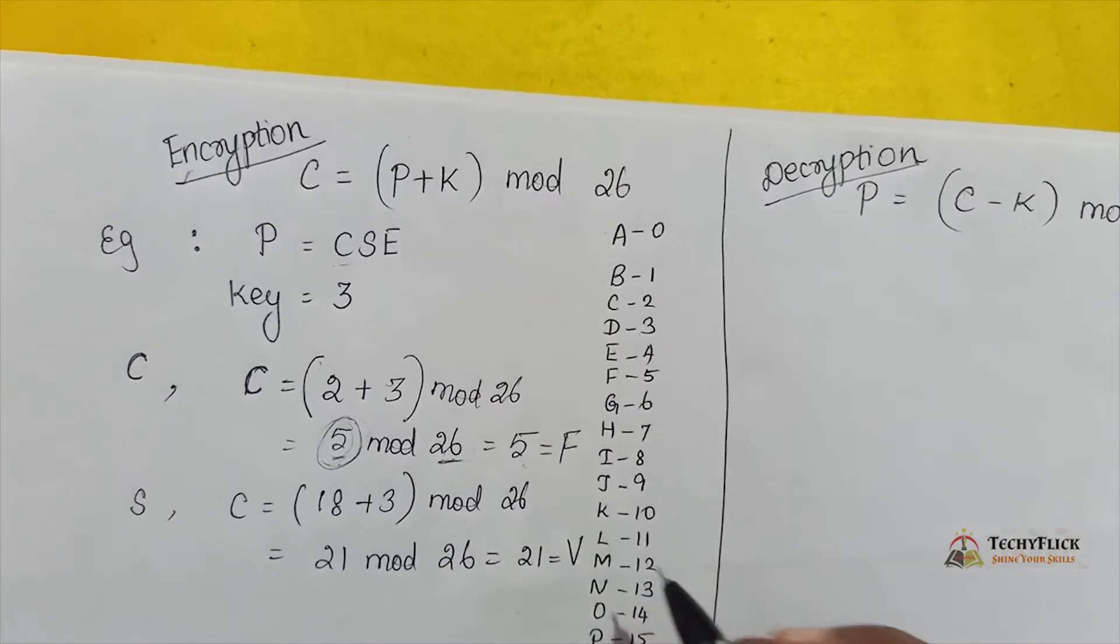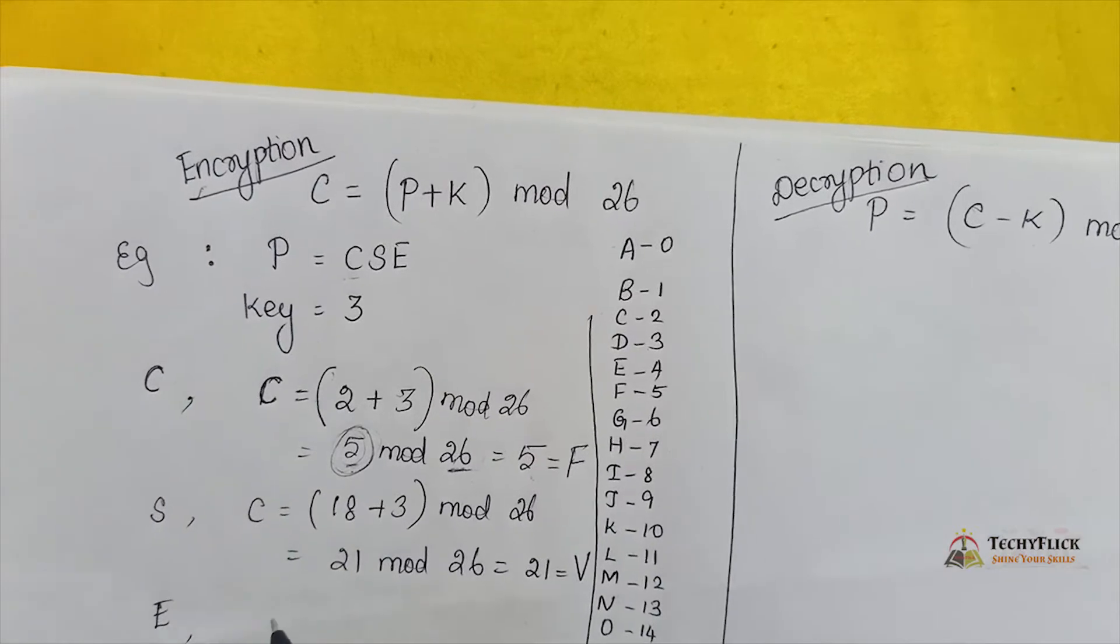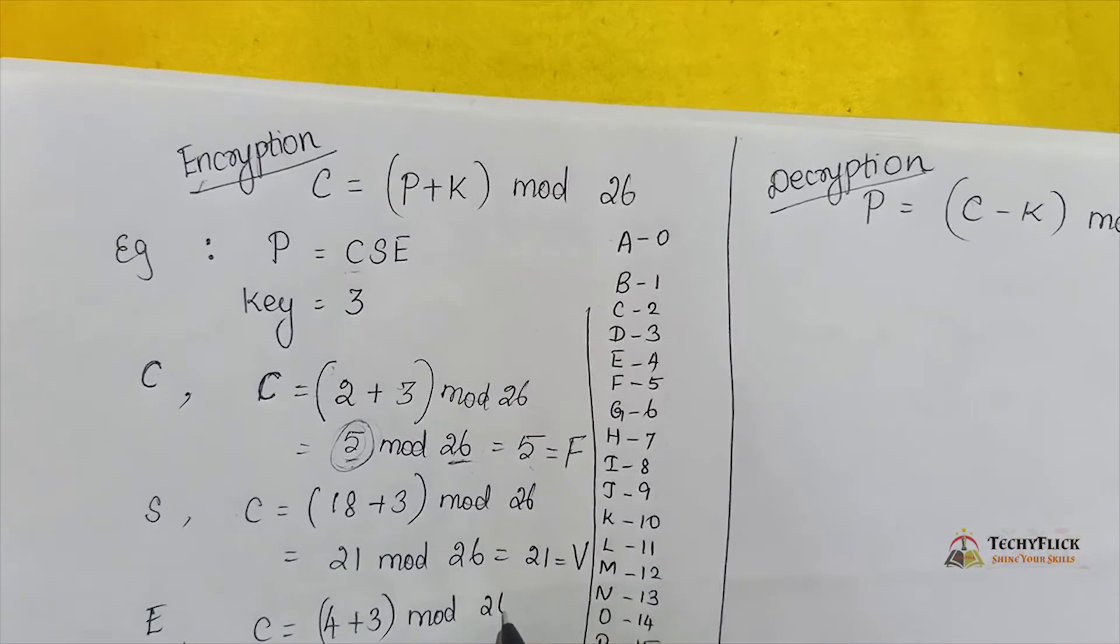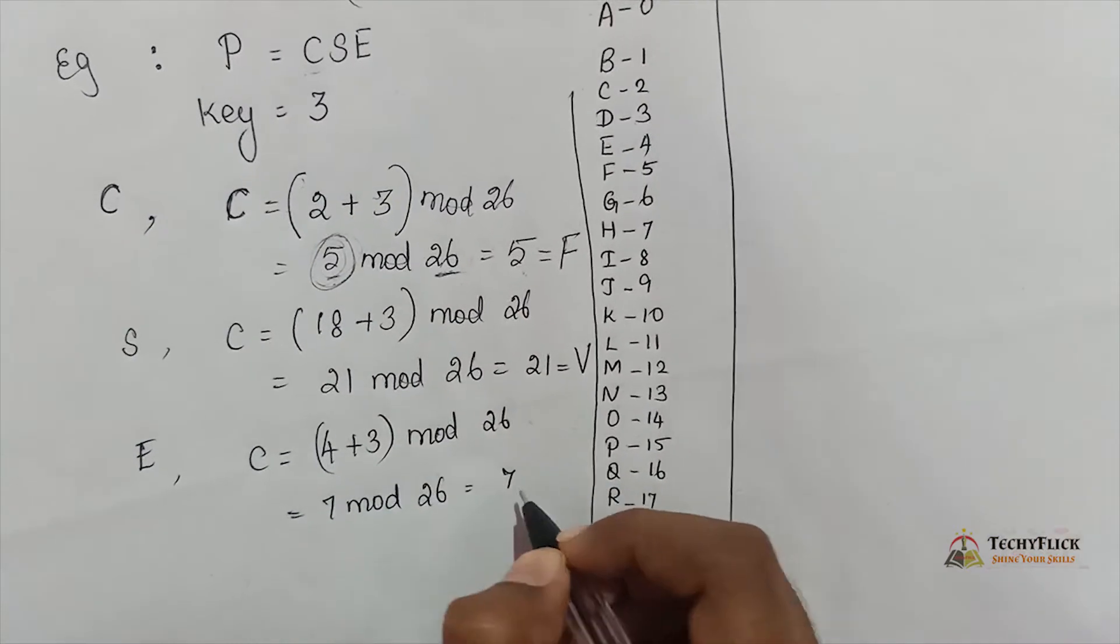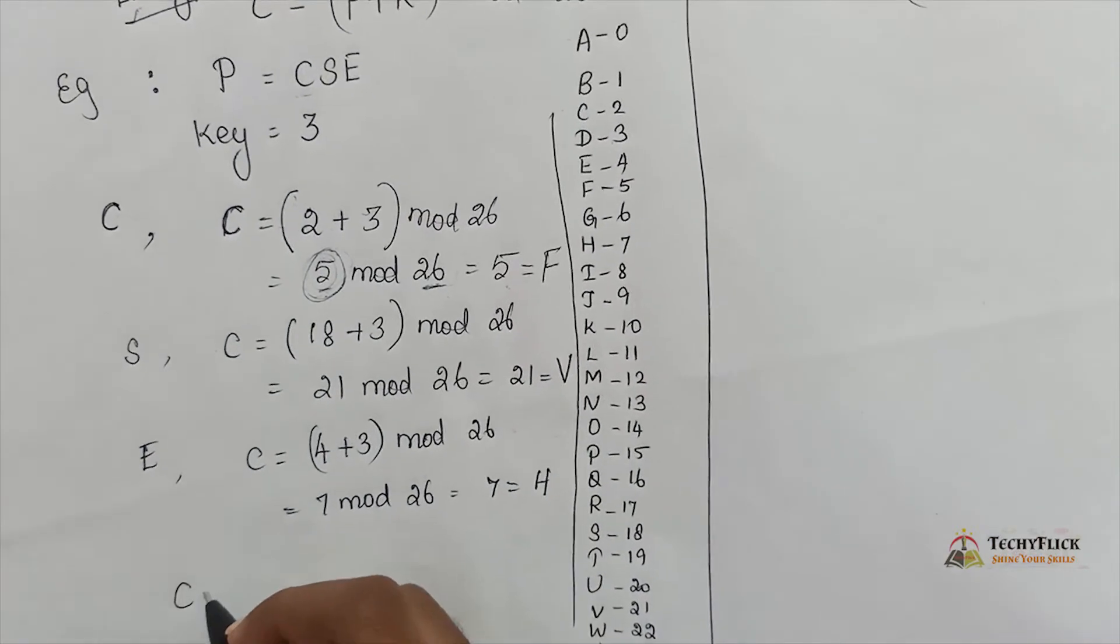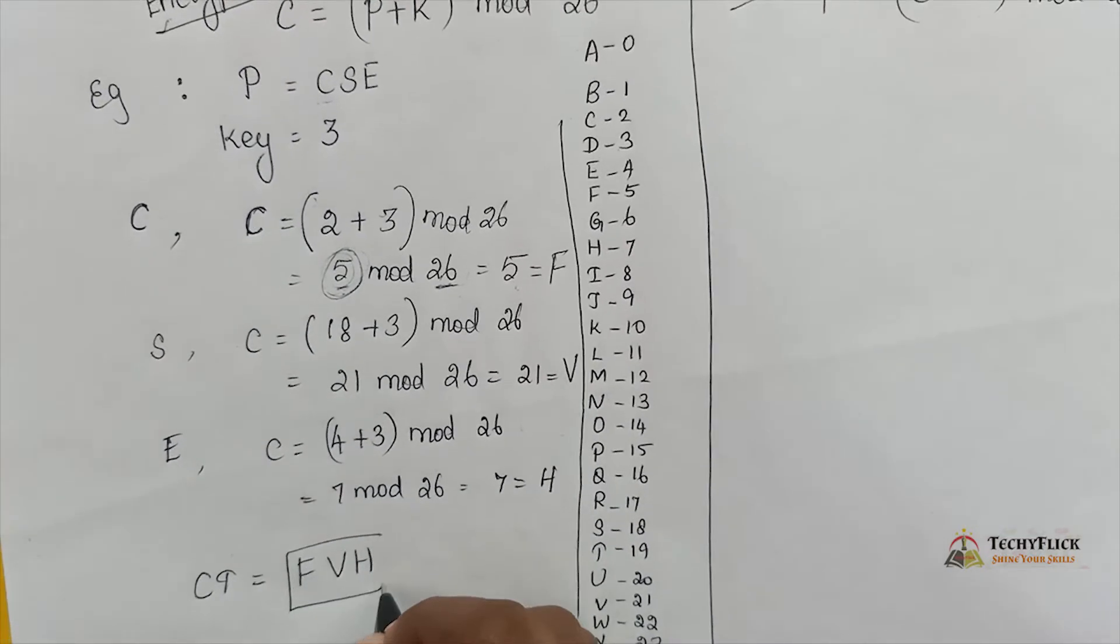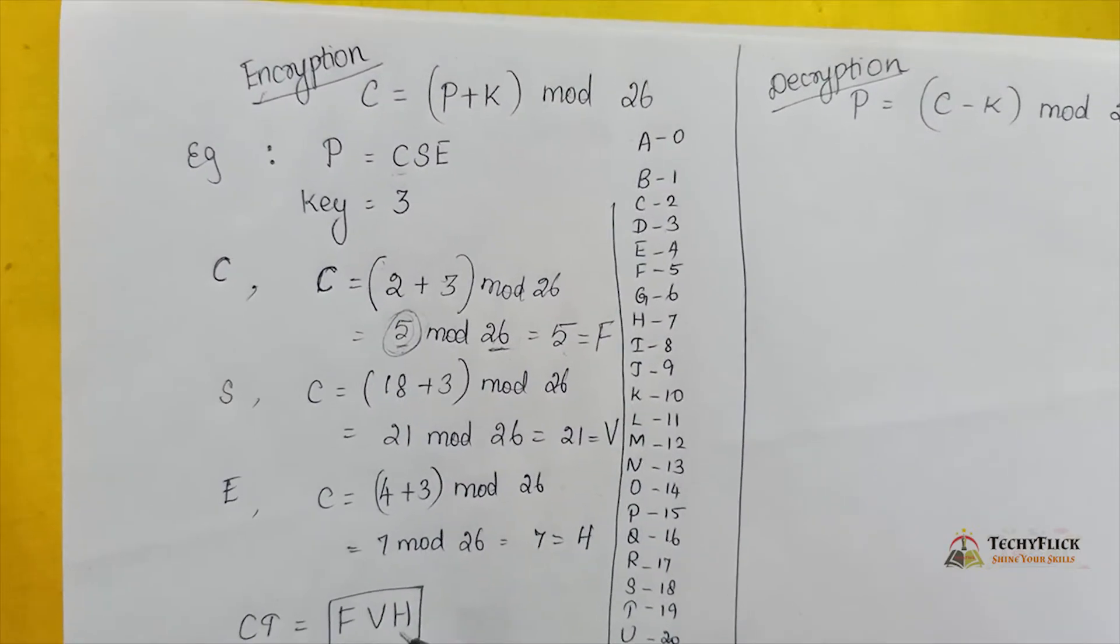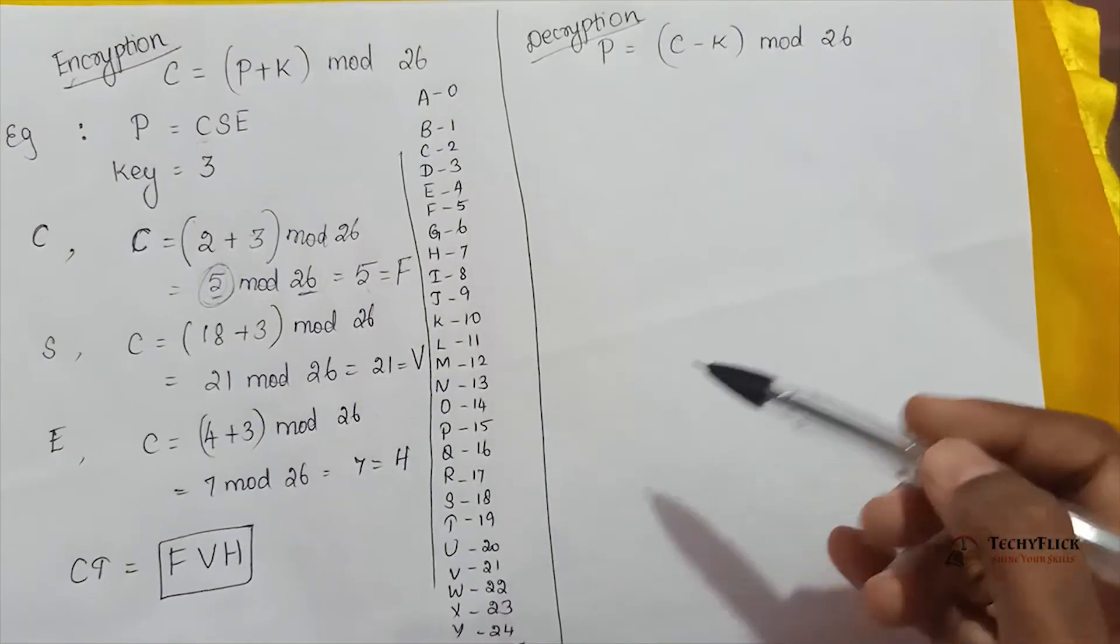So the cipher text is V. Next, E. C is equal to E's value which is 4, plus 3 key value, mod 26. 4 plus 3 is 7, 7 mod 26, so answer is 7. 7's value is H. So C converts to F, S to V, E to H. The cipher text is FVH.